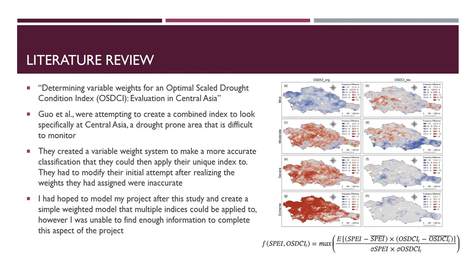In this paper, they were trying to create a method for monitoring drought in Central Asia. They created a variable weight system that helps to classify this specific area so they would be able to monitor it more effectively. I was planning to do something similar and create my own weighted variable model, but I was not able to find enough data to recreate this in any meaningful way.